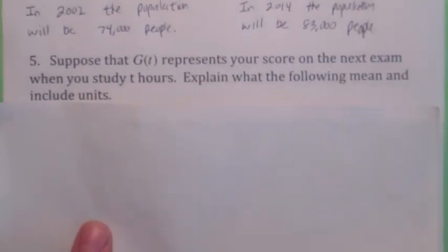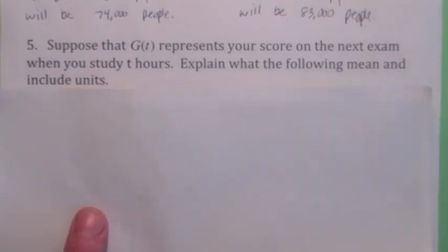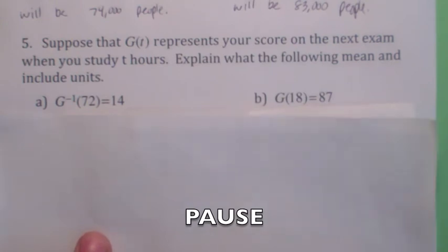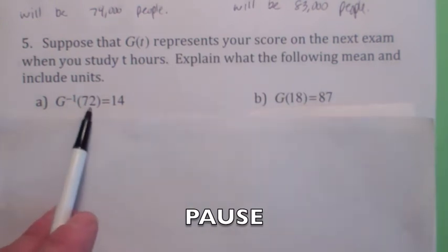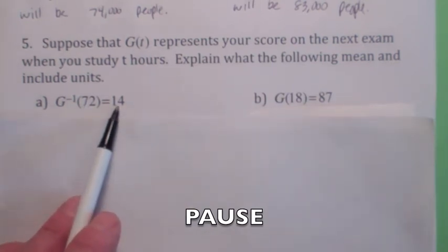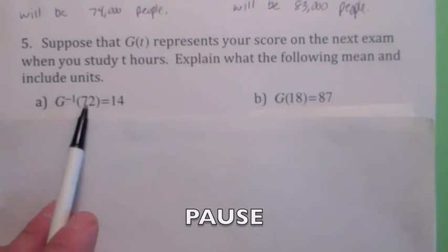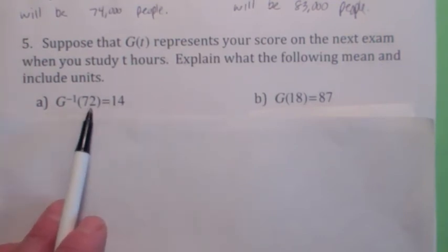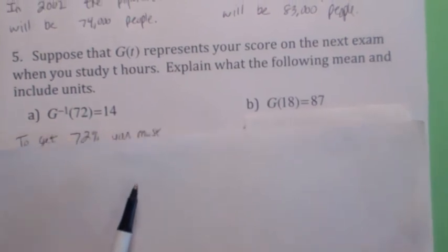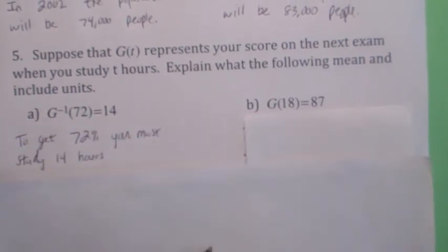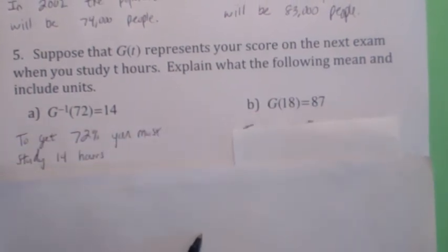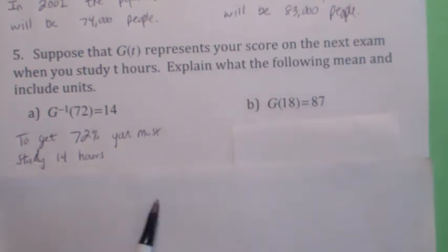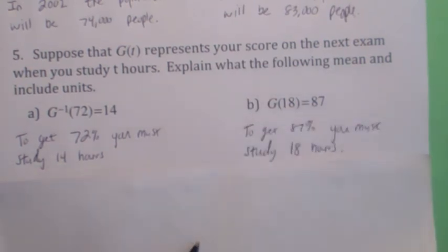Hit the pause button and try these two problems. For the first one, g inverse of 72 gives you the hours — the hours needed to get a 72. So to get a 72%, you need 14 hours of studying. For the other one, the hours are given, so it takes 18 hours to get an 87%.